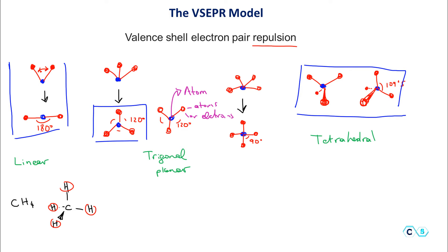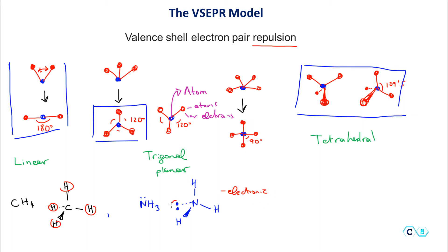If we draw the Lewis structure of ammonia, NH3, we remember there is a lone pair on the nitrogen. The nitrogen is in the middle, with one hydrogen up, another hydrogen to the side, a third hydrogen pointing toward us, and the lone pair pointing away from us. These four units are arranged as a tetrahedral, so this is a tetrahedral electronic geometry — because we are also considering the lone pair of electrons.